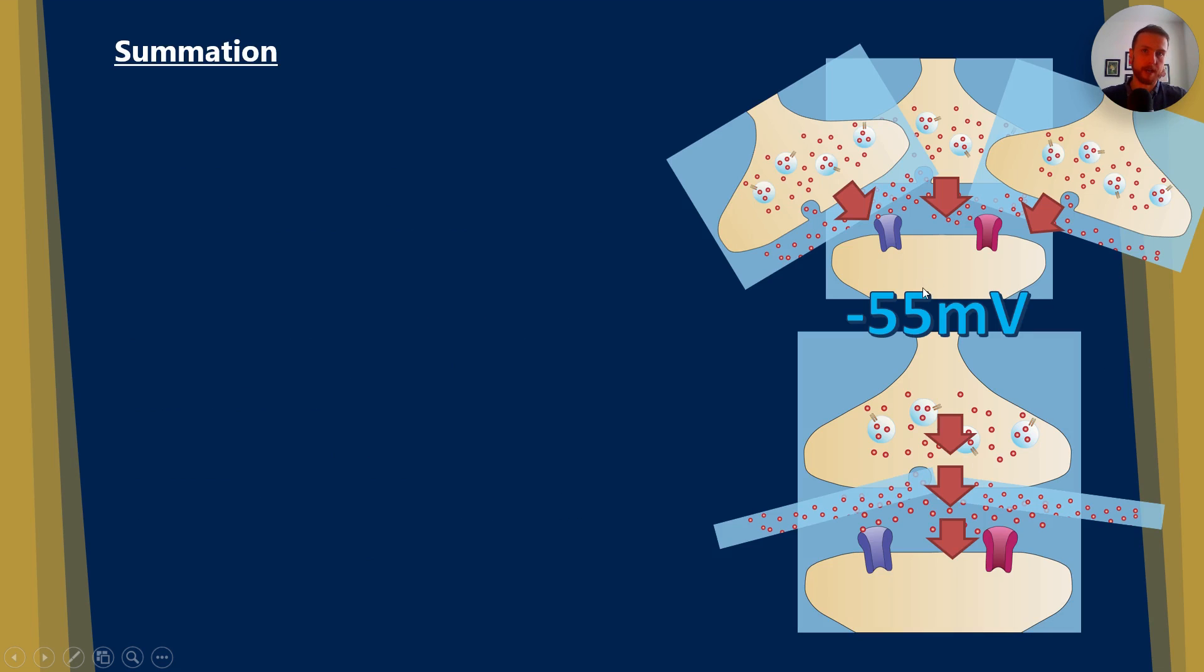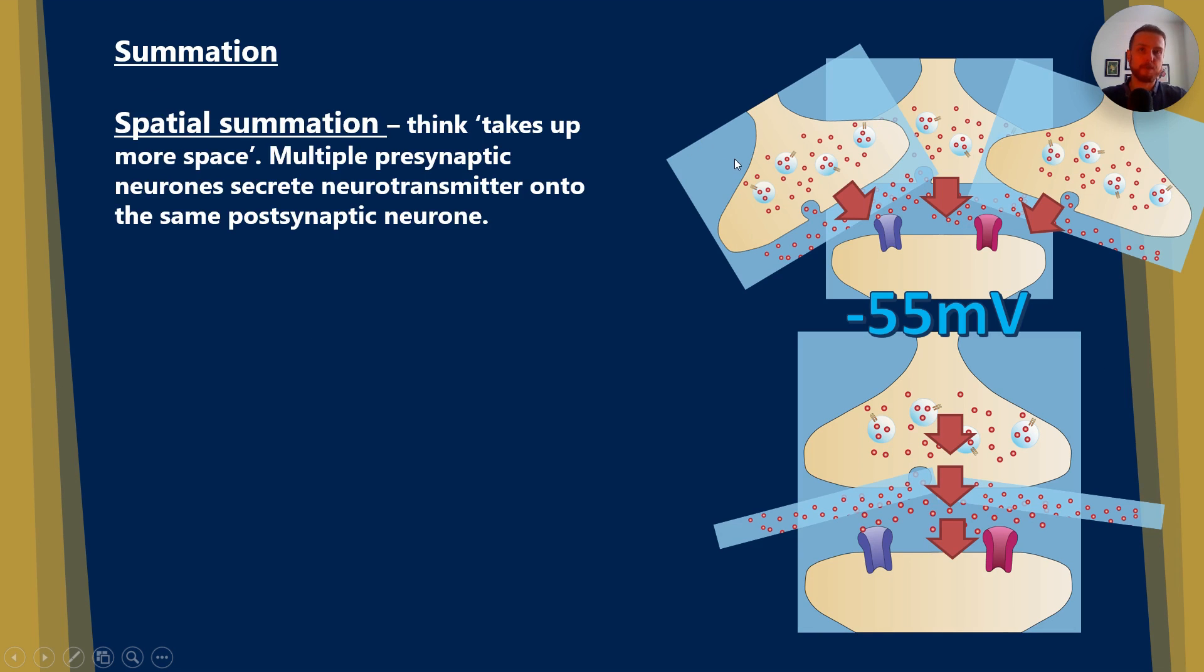We're going to talk a little bit about summation now. Think about the term summation as adding things together, doing sums. So there's two types. The first one is spatial summation. Now I like to tell my students to think about taking up more space. And this is where multiple pre-synaptic neurons secrete neurotransmitter onto the same post-synaptic neuron. This makes it more likely that that threshold of minus 55 millivolts will be reached because more positively charged sodium ions will enter that post-synaptic neuron.